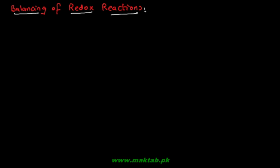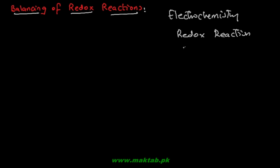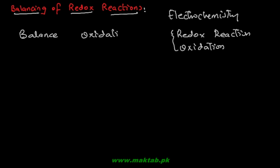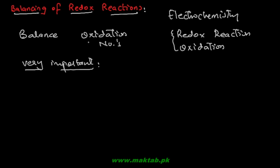Balancing of a Redox Reaction. Last time we started the chapter of Electrochemistry. In Electrochemistry, we saw the basics of Redox Reactions — we talked about reduction and oxidation separately and saw the Oxidation Number in detail. Today, we are going to see how you can balance a Redox Reaction using Oxidation Numbers. This technique is very important — a question will come in your board exams in which you have to balance Redox Reactions, either with the Oxidation Number Method or with the Ion Electron Method.